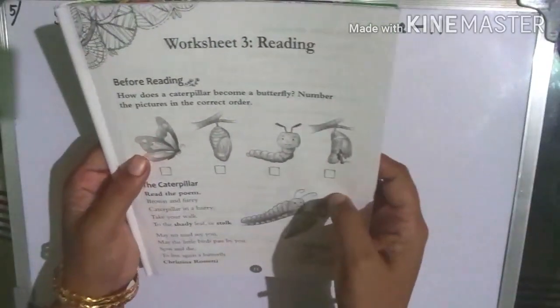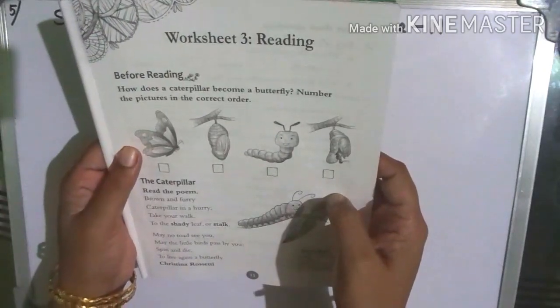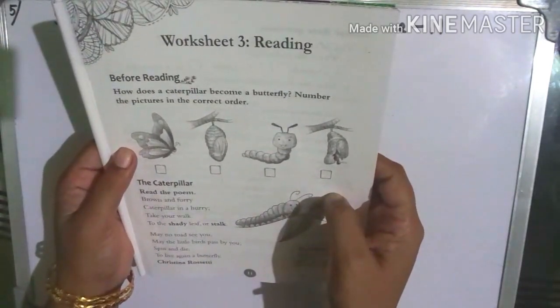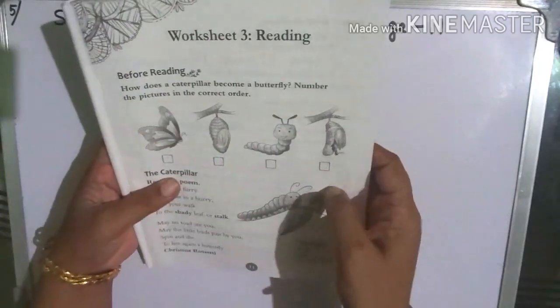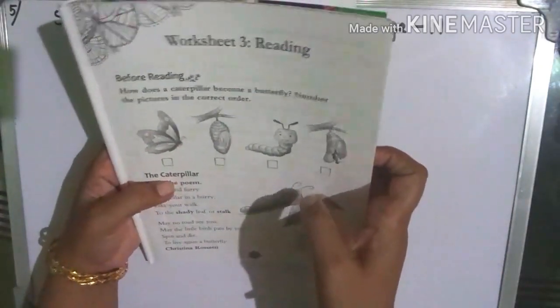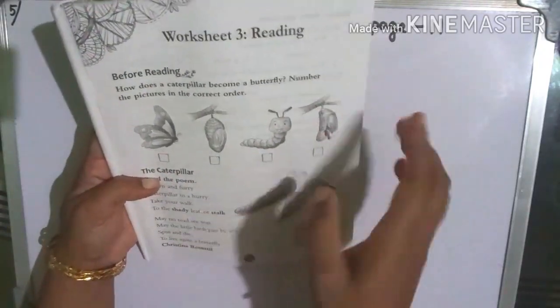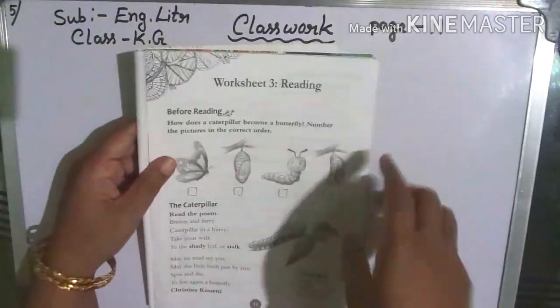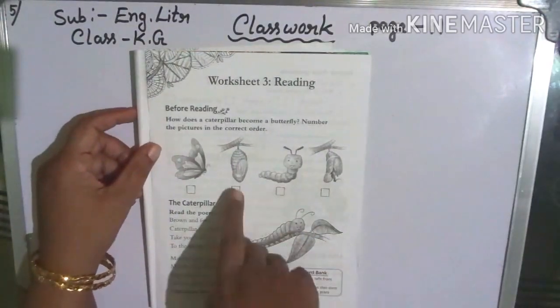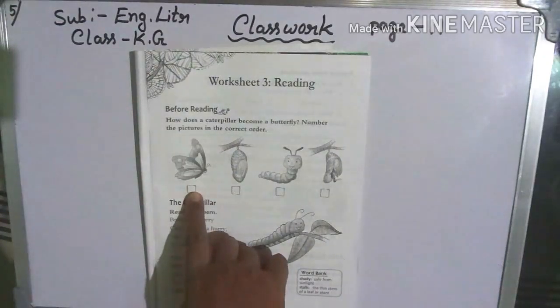Before reading: How does a caterpillar become a butterfly? Number the pictures in the correct order. So children, first you see the picture. First one, 1, 2, 3, 4. So you write here in this box: 1, 2, 3 and 4.